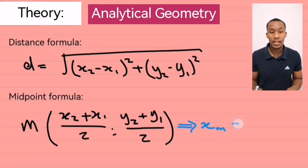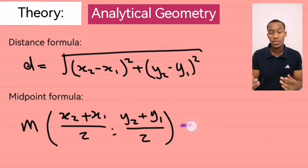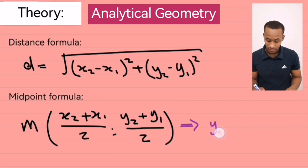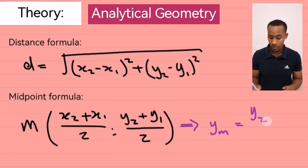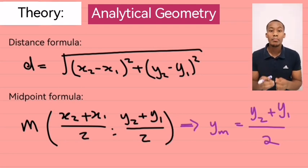xm equal to x2 plus x1 over 2. And you can repeat the same process for y's. ym equal y2 plus y1 over 2. Where in this case, xm and the ym, those are the midpoint x and y values.